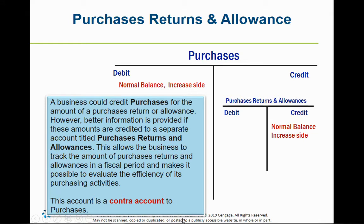Looking at the purchases account: purchases has a normal debit balance and increases with a debit — we learned that in chapter nine. Purchases returns and allowances is actually a contra account to purchases, which means it contradicts the purchases rule. Since purchases decreases with a credit, purchases returns and allowances is going to have a normal credit balance.